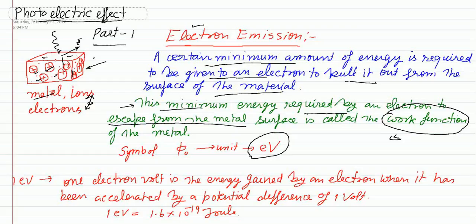The unit of work function is electron volt. If we have to measure the magnitude of this energy, we measure it in terms of electron volts. The symbol for the work function is φ₀ (phi naught). The electron volt unit is used for atomic systems and molecules.